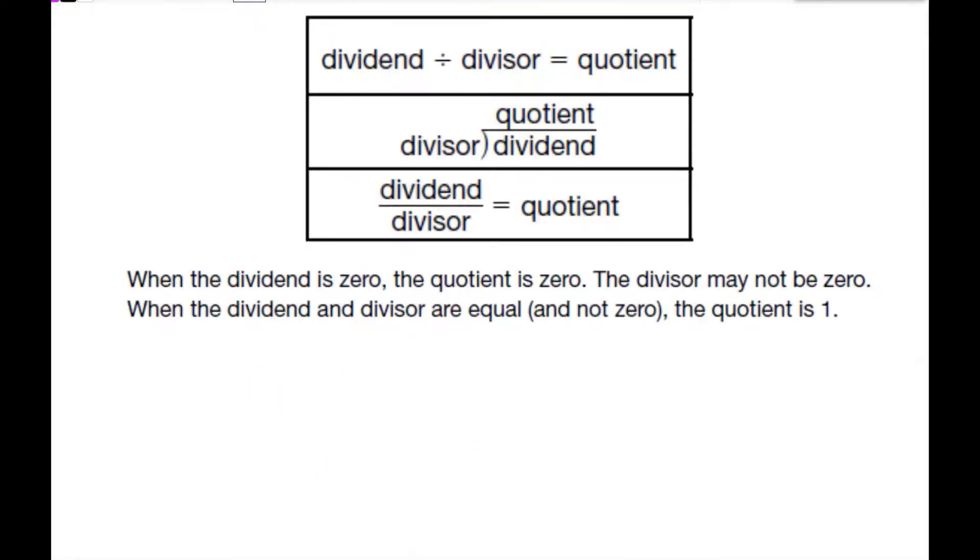With division we can use three different symbols to show this. We have our division symbol, our division box, and our division bar. With all of these numbers, the answer is always the quotient. The dividend is the number we're dividing and the divisor is what we're dividing by.